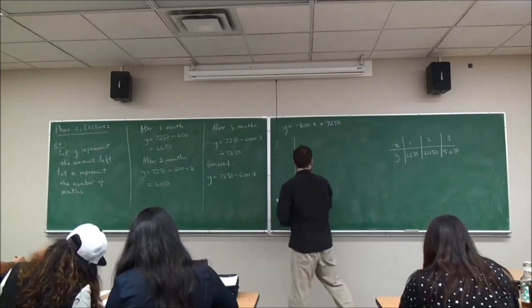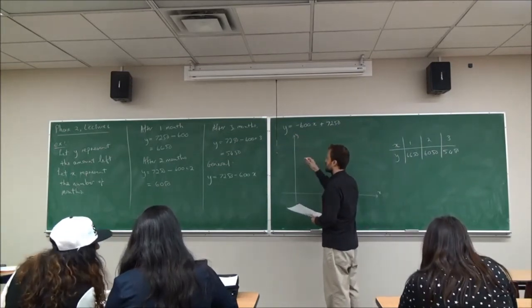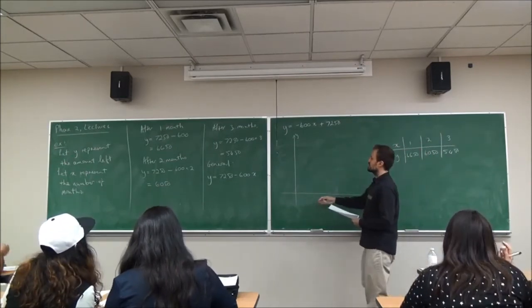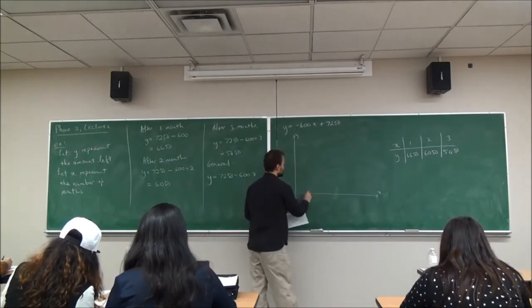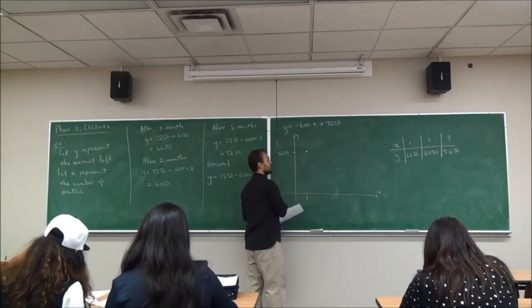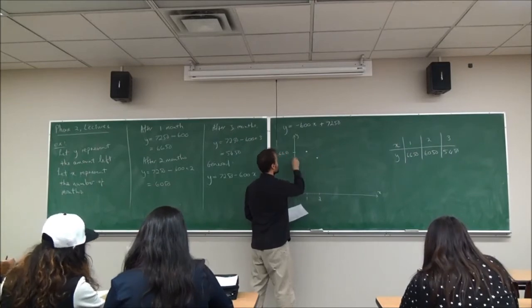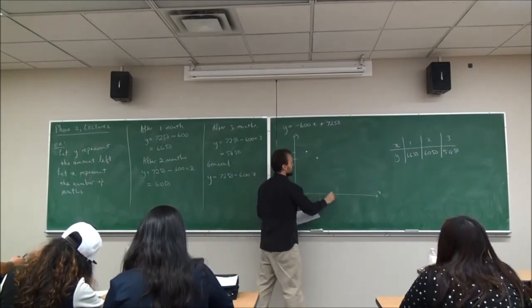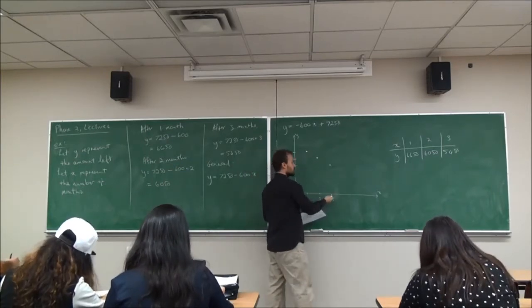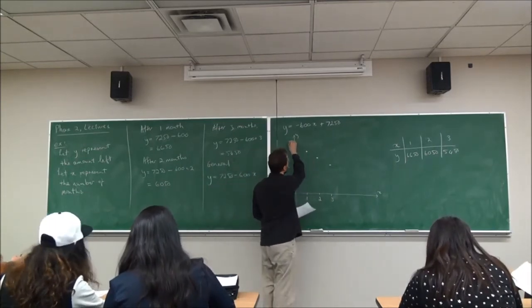If I look at graphically representing how Y changes with X: I have a number line for all my X values and a number line for all my Y values. When X equals one, I have a Y value of 6,650 — I can represent that as a point in the XY plane. When X equals two, I have a slightly lower value of 6,050. If I continue, doing half months and calculating the Y value for each X value according to that equation, they all sit on a straight line.